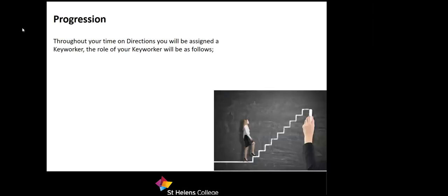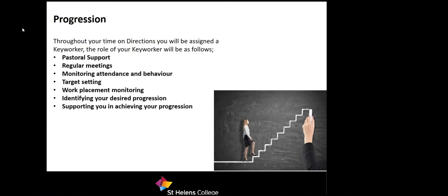Progression is ideally what everybody wants when they come to Directions, and 99.9% of people do achieve progression. You get out what you put in — the more effort you give, the better your chances of progress. Throughout your time on Directions you'll be assigned a key worker whose role is to support you pastorally, meet with you regularly, monitor attendance and behaviour, set targets with you, monitor your work placement attendance and progress, identify your desired progression, and support you in achieving it.